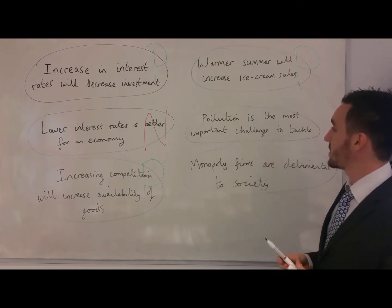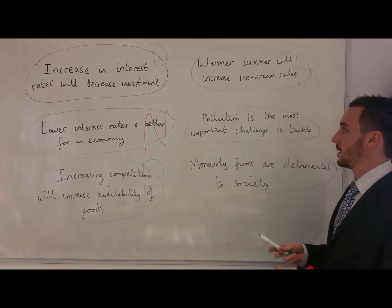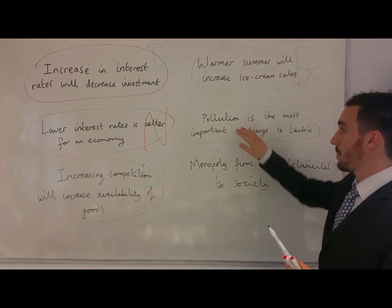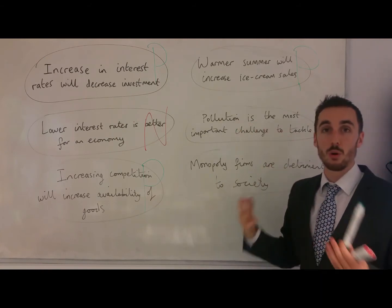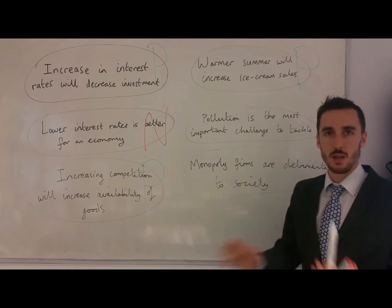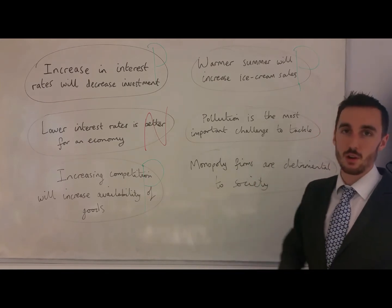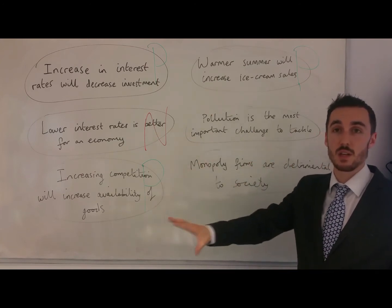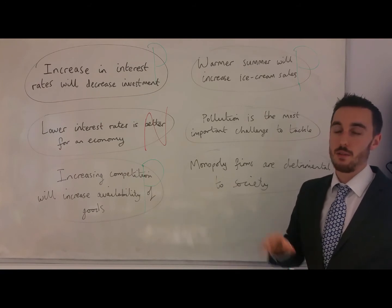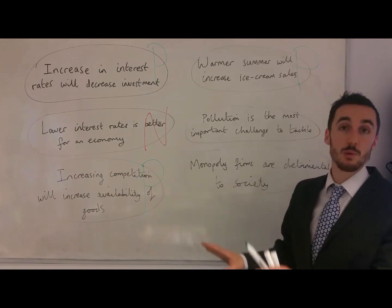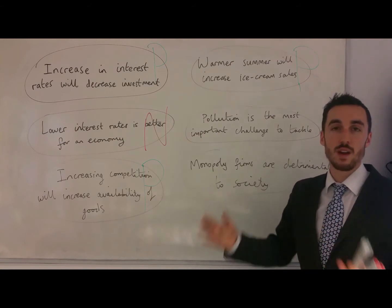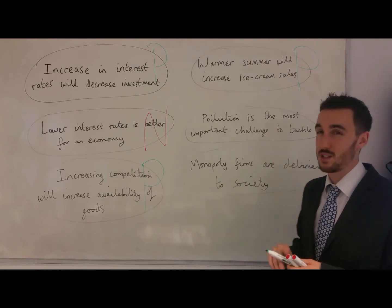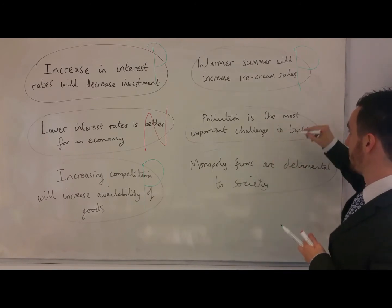'Pollution is the most important challenge to tackle.' How are we going to find evidence or facts and figures for that? It's quite difficult. You might say pollution is terrible and needs to be stopped, but that's just your opinion based on your values. A right-wing free market economist might say leave the markets alone — they'll sort out pollution and it's not the most important thing to tackle. So this is not based on facts and figures; it's a normative statement.